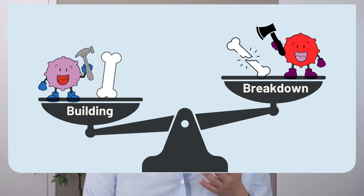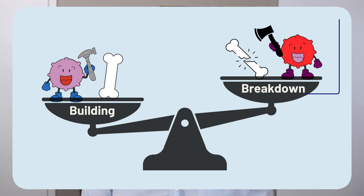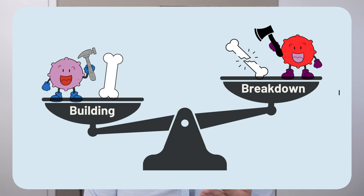Now, why do we get osteoporosis and who is most at risk? The problem is in the balance between bone formation and bone breakdown. There are specific cell types within our bones whose job it is to build up bone and whose job it is to break it down. We require a nice balance between these two forces to keep our skeletal system strong. When the balance gets tipped too far towards bone breakdown, the cells who build bone can't keep up and our bones end up getting weaker.